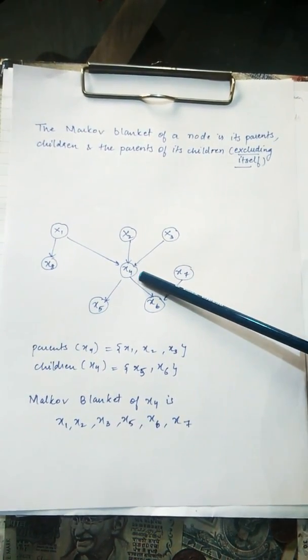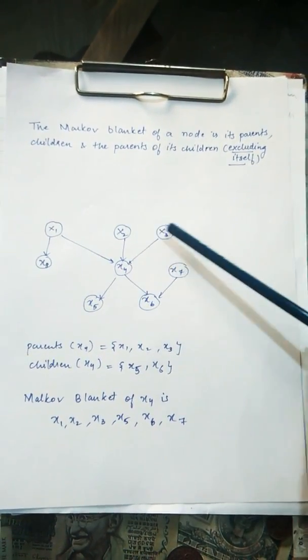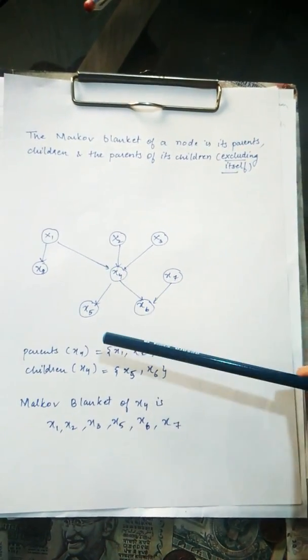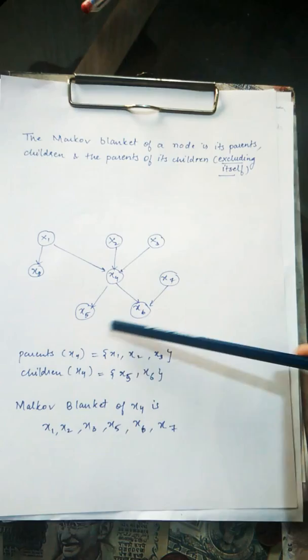The parents of X4 are X1, X2, and X3. And what are the children of X4? That is X5 and X6.